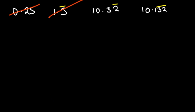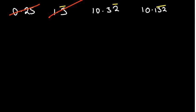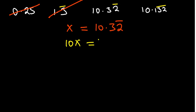Now let's try 10.32 recurring. That number means 10.3 and then the 2s don't end because the bar is only on 2. As usual, we let x equal 10.32 recurring. The first step is to make sure only recurring numbers appear on the right-hand side of the decimal. Since 3 is not recurring, we multiply by 10: 10x = 103.2 recurring. Now we only have recurring 2s after the decimal point.